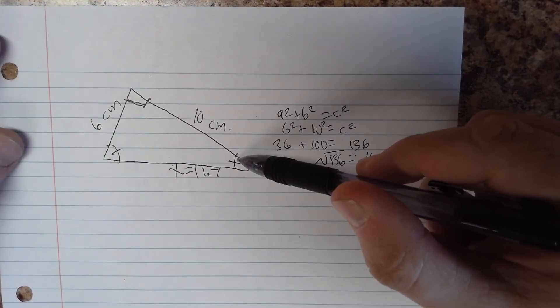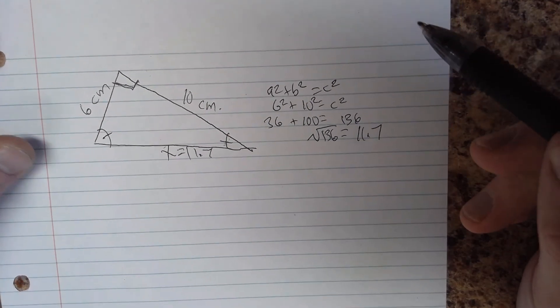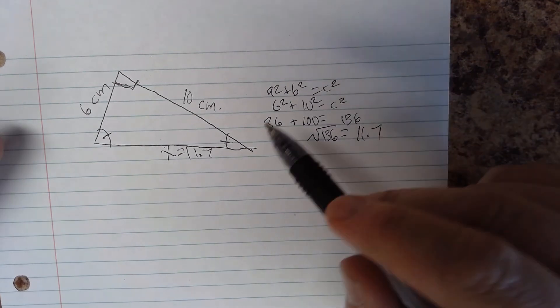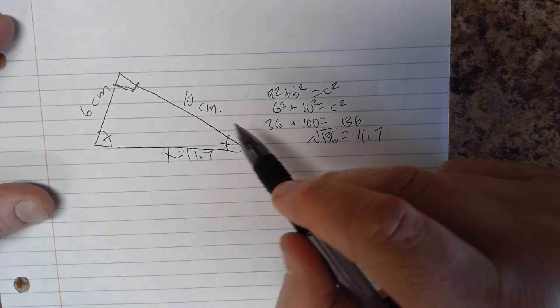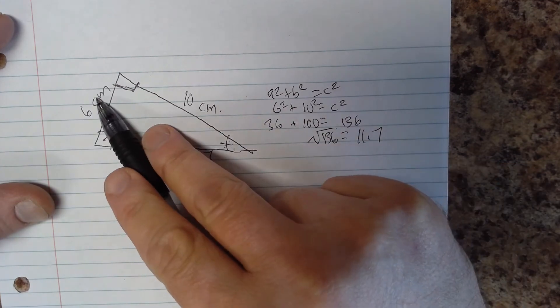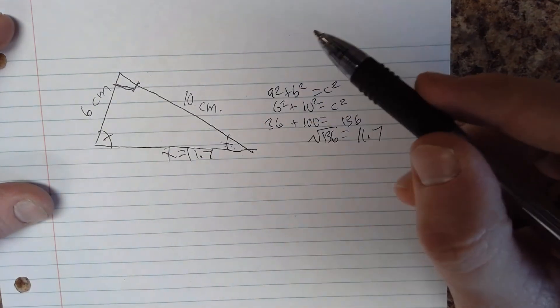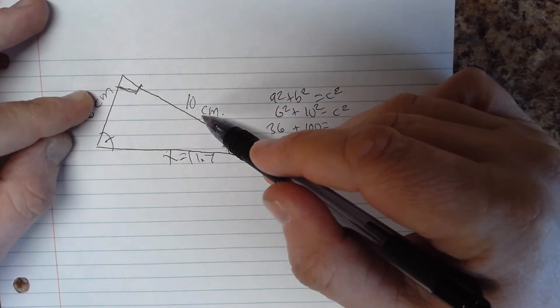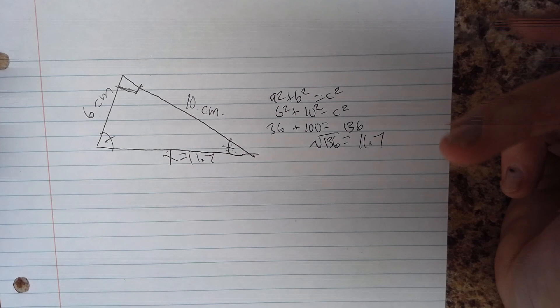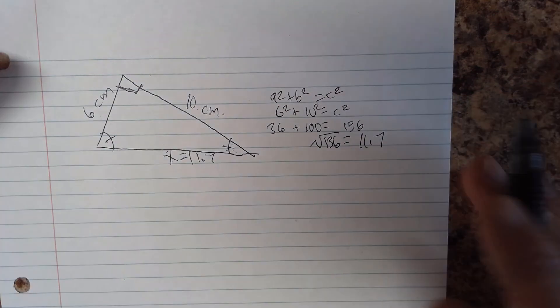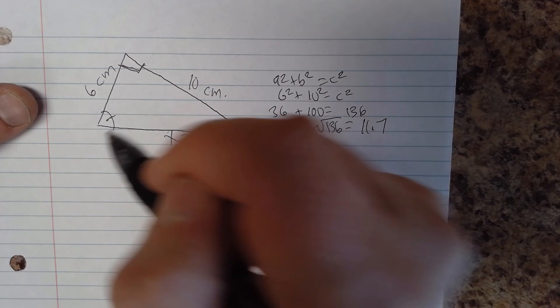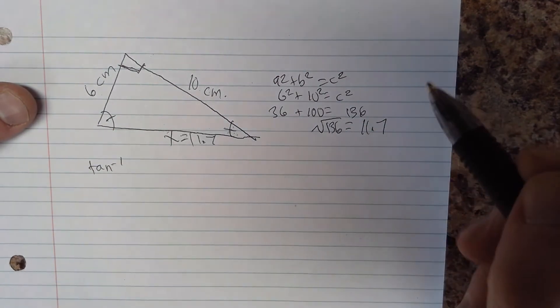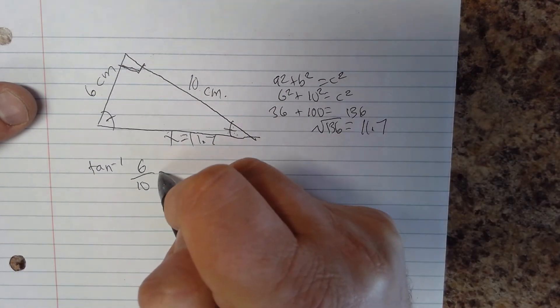Now I have three sides and I'm going to solve for an unknown angle. I'm going to solve for this angle here first. Now let's look at my known sides. I've got all three of them, so I'm going to use opposite over adjacent. This is the hypotenuse, this is the opposite side, this is the adjacent side. I'm going to use tangent, 6 over 10 to solve for this angle.